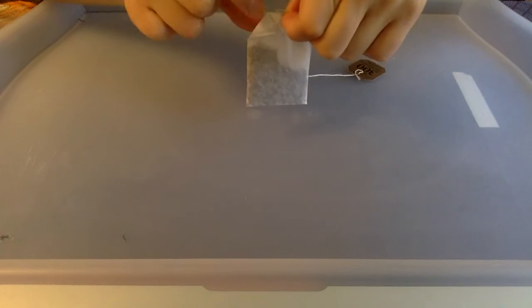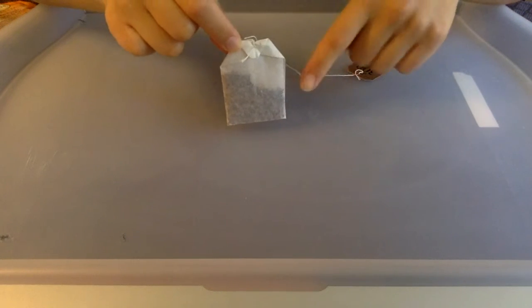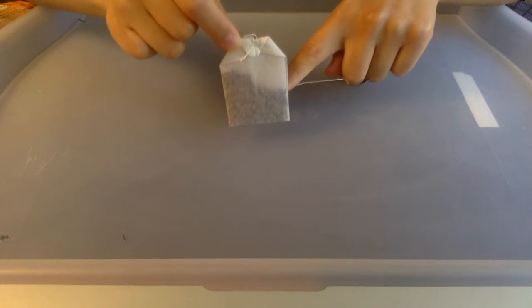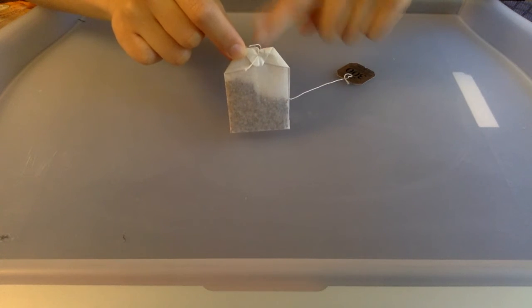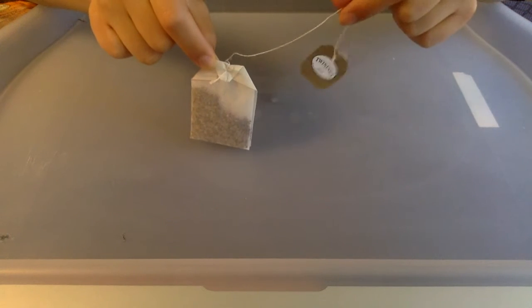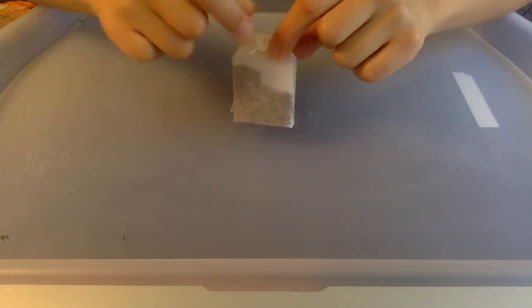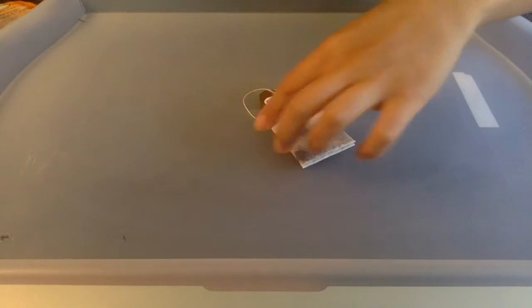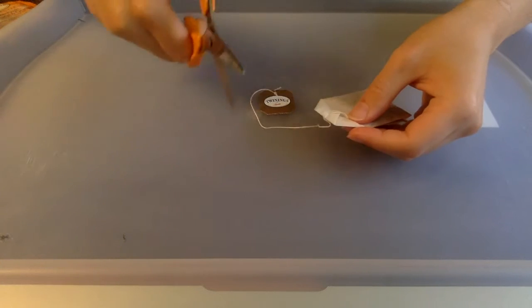...is take your tea bag and get rid of all the tea inside as well as any staples or any extra string like this that might be attached to it. You can either just pluck it out with your fingers or you can also get a pair of scissors and just snip it off like that.